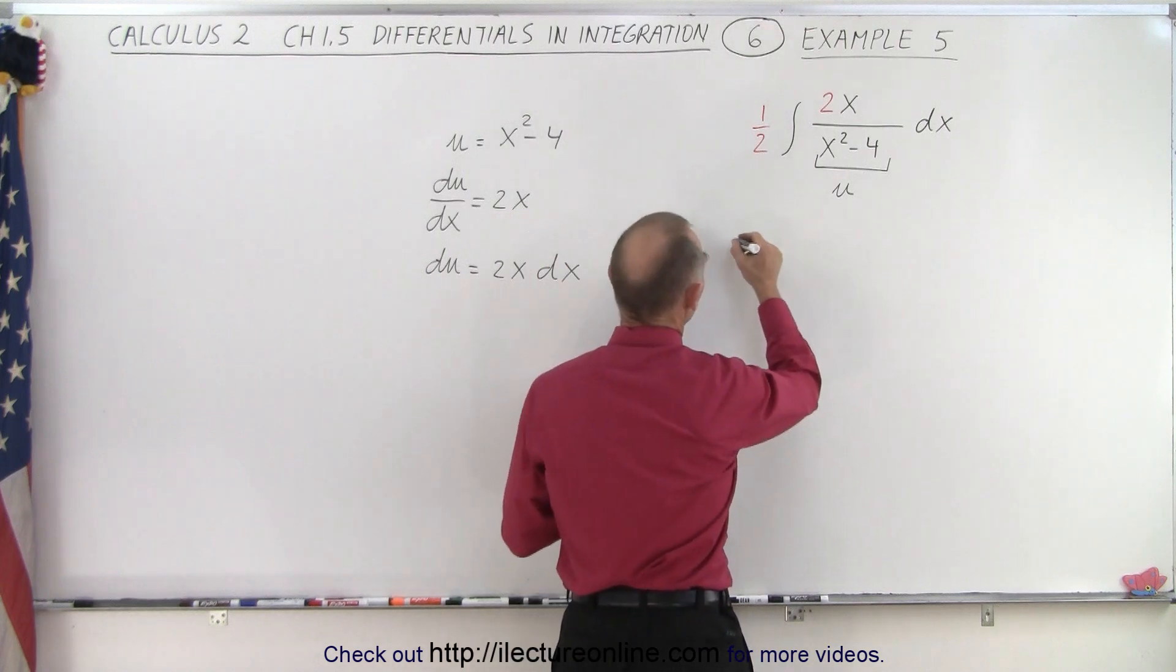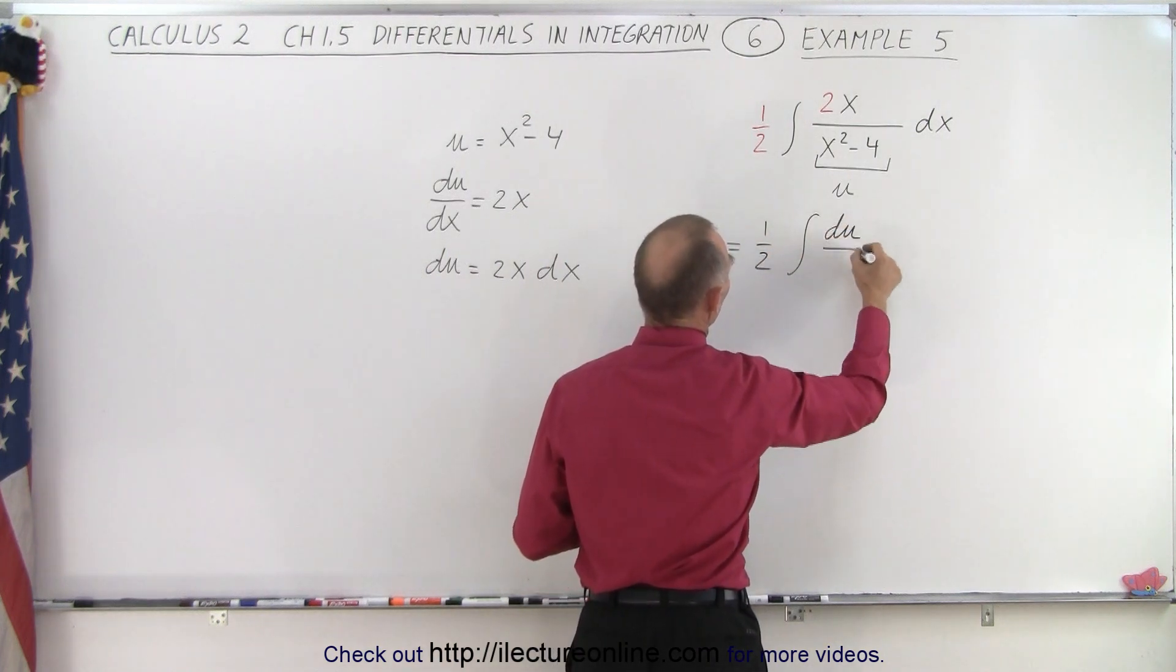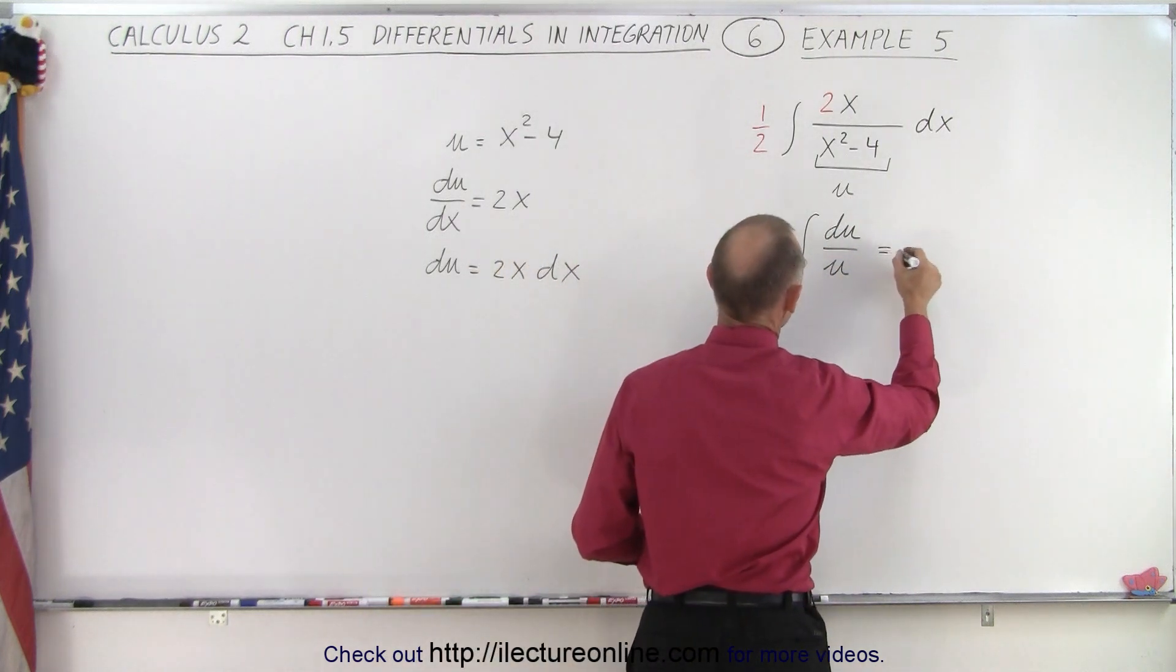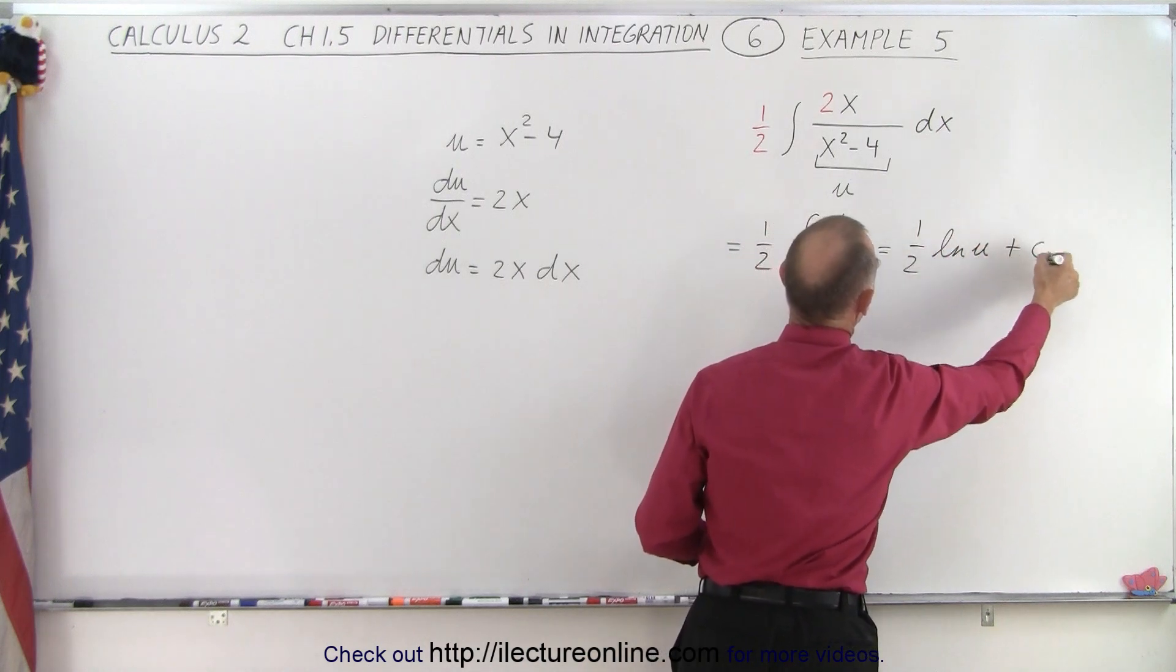So essentially, this becomes equal to one half times the integral of du over u. Of course, that you know to be the natural log of u. So this is equal to one half times the natural log of u, plus a constant integration.